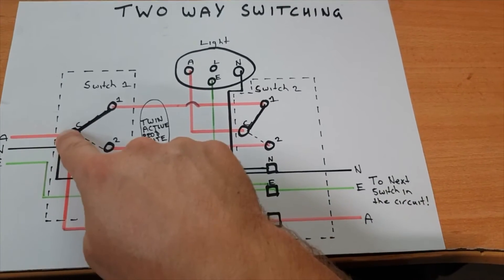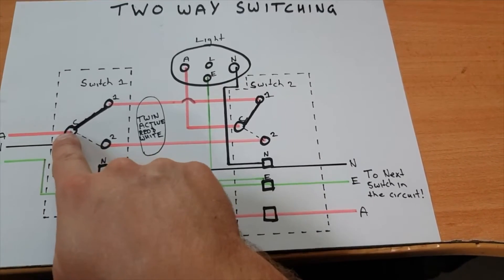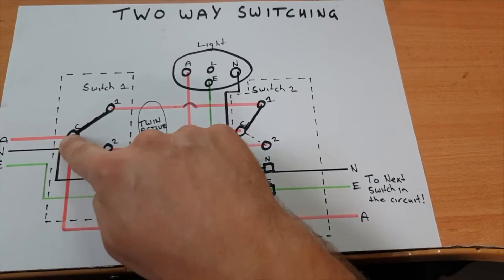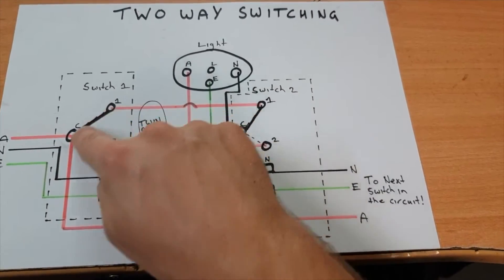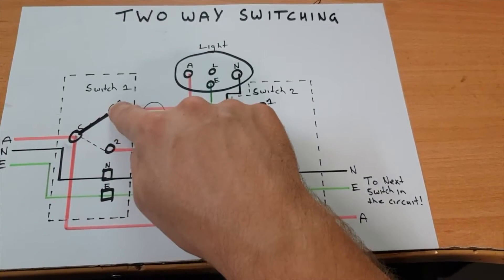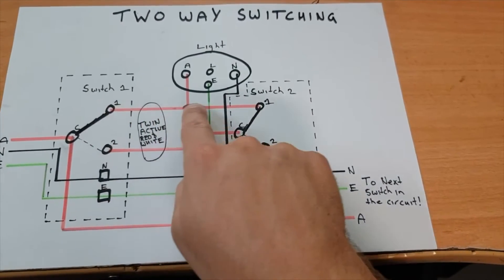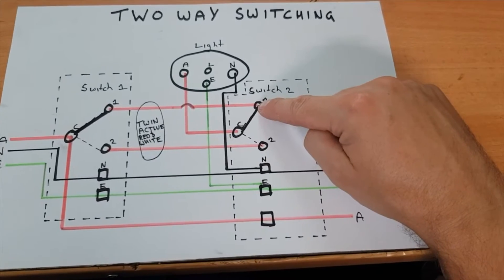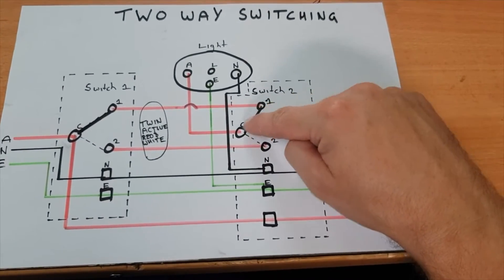This part here is just for your switching. So you get your hard active coming in to your common. You follow this solid line up, that's your switch, that just means your switch is on. The power will flow through here to your number one, and because this switch is also on, it will flow down here and then up to your light.